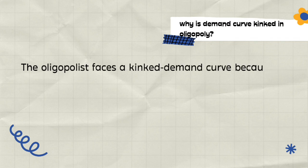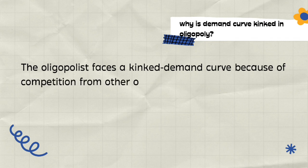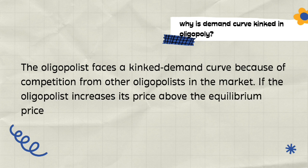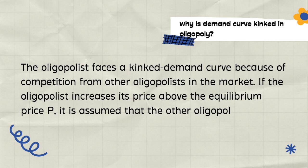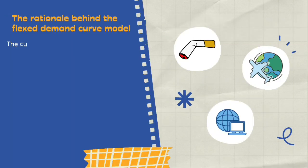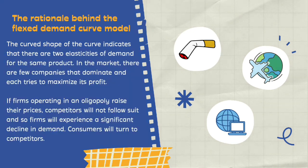Do you know why the kinked demand curve came about in oligopoly? If an oligopoly increases its price above the equilibrium price, it is assumed that other oligopolies in the market will not follow with a price increase. The rationale behind the kinked demand curve model is that the curve indicates there are two elasticities of demand for the same product.